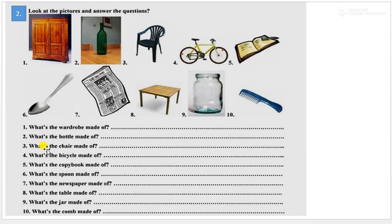Third, what's the chair made of? Number four, what is the bicycle made of? Number five, what is the copybook made of? Number six, what is the spoon made of? Number seven, what's the newspaper made of? Number eight, what is the table made of? What's the jar made of? Last one, number ten, what's the comb made of?